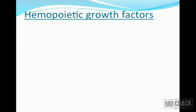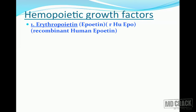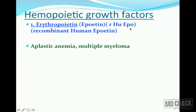Next we cover hematopoietic growth factors. The first is erythropoietin, available as recombinant human erythropoietin — written as rHuEPO, where 'r' stands for recombinant, 'Hu' for human, and 'EPO' for erythropoietin.